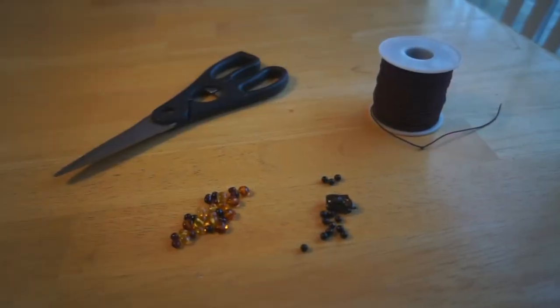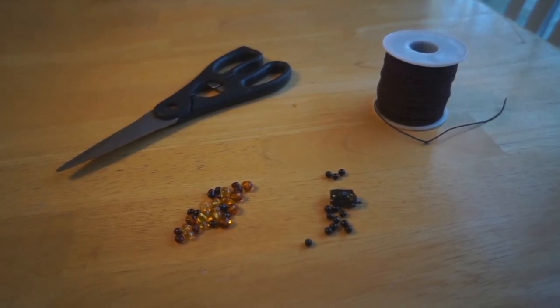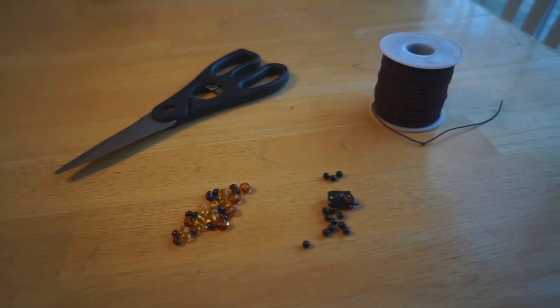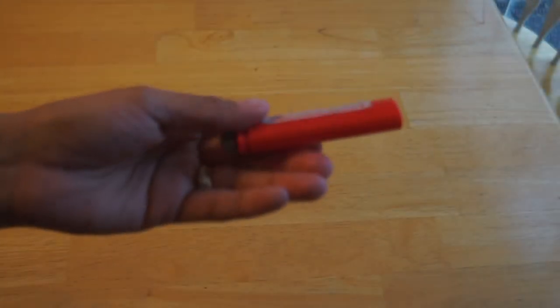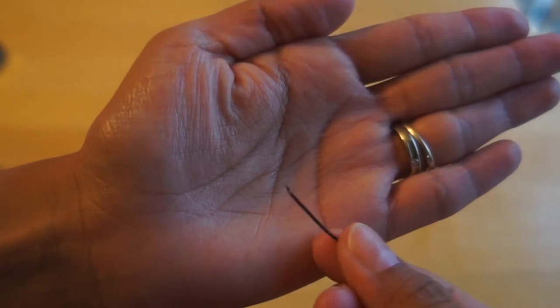So to start off you're gonna need some elastic thread or hemp cord, some Baltic amber resin beads and some shungite stone beads, some scissors, and the last two are optional. A lighter will help you cut the thread on an angle once you sear the edges off.